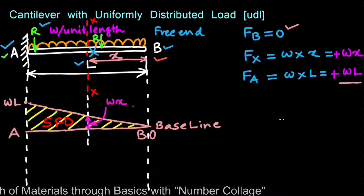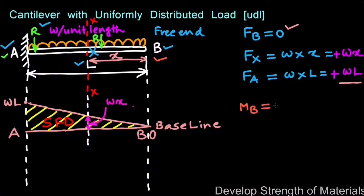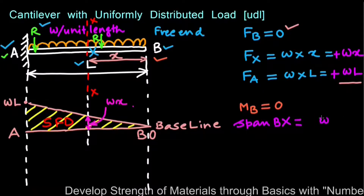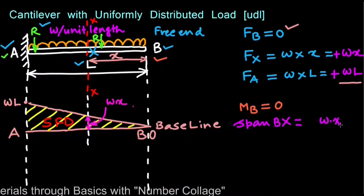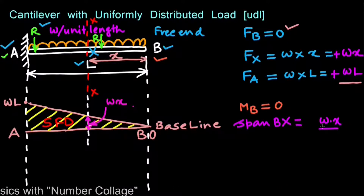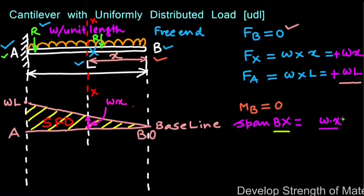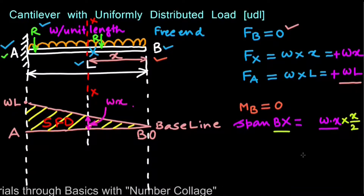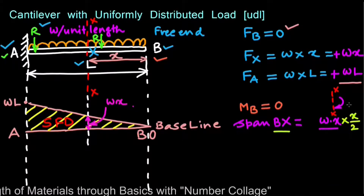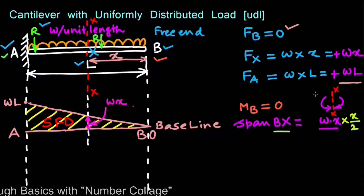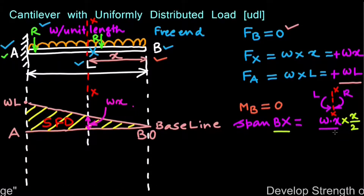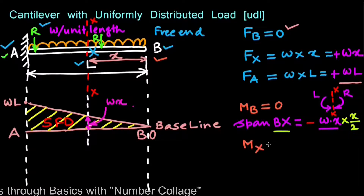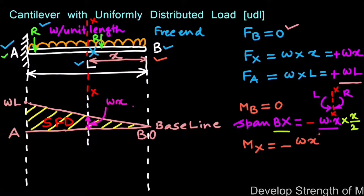At the free end B of this cantilever the bending moment MB equals 0. The load over span Bx is W multiplied by the distance X, but it acts at the mid-span of Bx, so for the moment we multiply by X/2. Since this bending moment is clockwise due to the right vertical load and anticlockwise to the left of section XX, the bending moment MX is negative: MX = −Wx²/2.